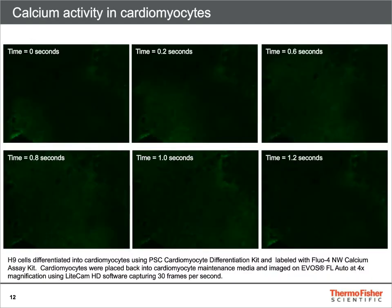Here we show calcium activity in cardiomyocytes generated using the PSC Cardiomyocyte Differentiation Kit over 1.2 seconds at 30 frames per second. Cells were labeled using the FLUO4NW calcium assay kit and imaged using EVOS FL-AUTO at 4X magnification.